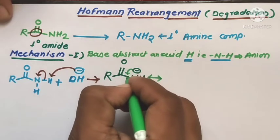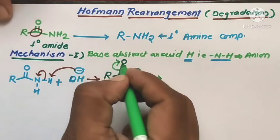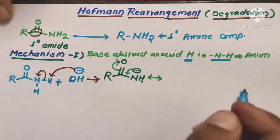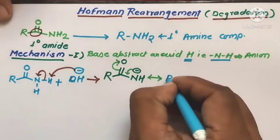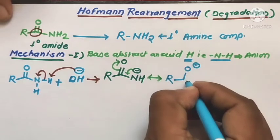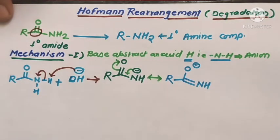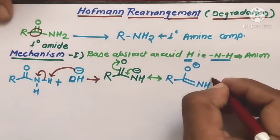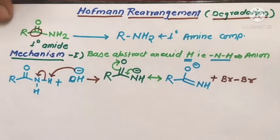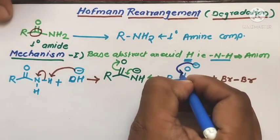This anion molecule resonates to form a resonating structure. The bonding electrons shift to convert a single bond to a double bond, and these bonding electrons shift toward the oxygen atom to convert a double bond to a single bond, giving the resonance form RC(O⁻)=NH.